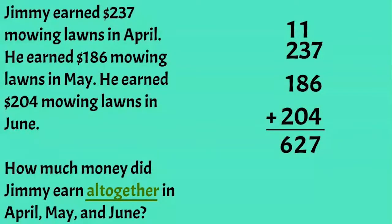Now we have found that Jimmy earned $627 altogether in April, May, and June. Let's try a problem that's a little trickier.